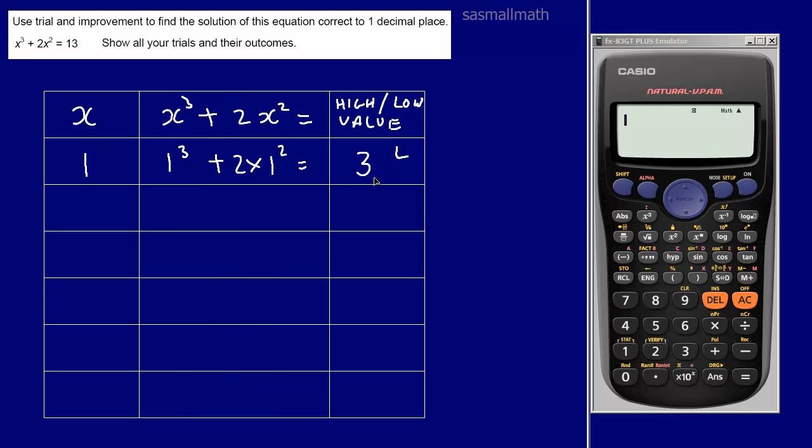Well that's low, so we'll find another value now and we'll increase x to two. So we go two cubed plus two times two squared. Two cubed is eight, two squared is four times two, that's another eight, so eight plus eight is sixteen, and that's bigger than thirteen so we label that as high. So our answer is going to be somewhere between one and two. Well, it makes sense to pick the middle.